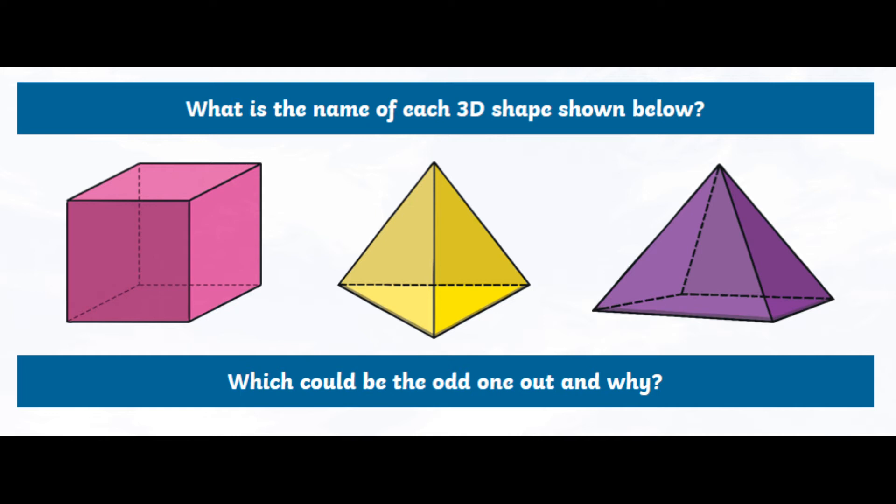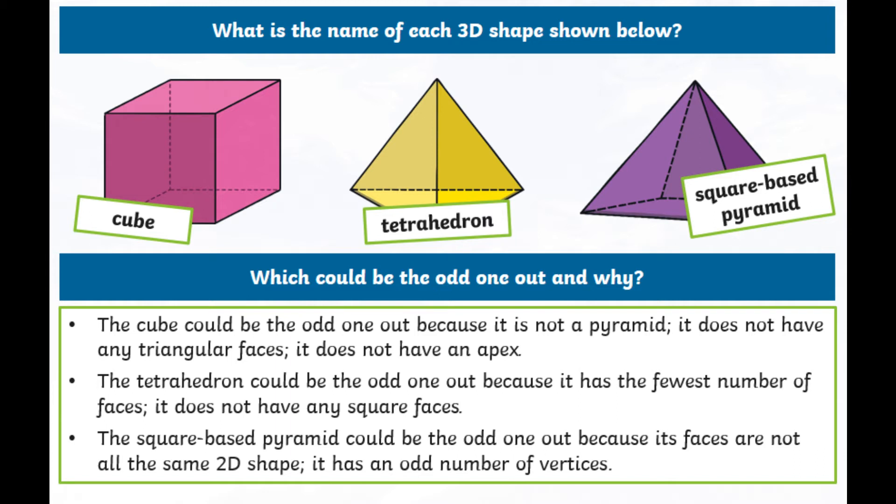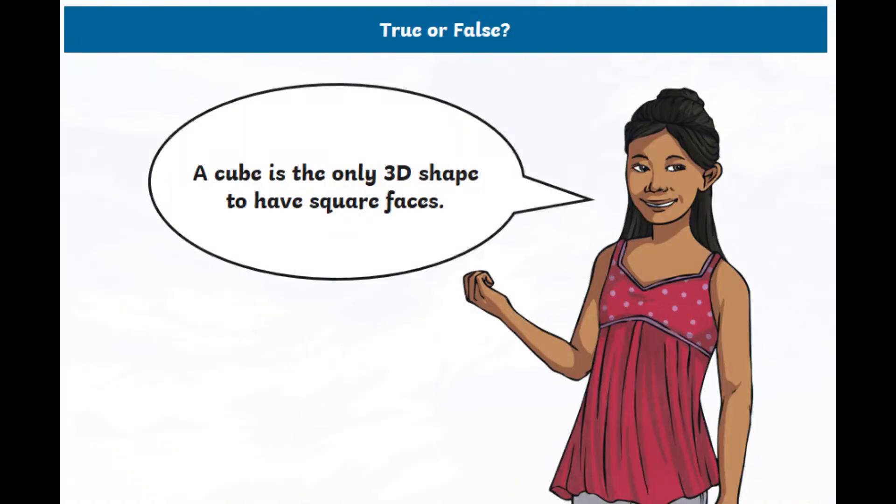So we've got a cube, we've got a tetrahedron, and we've got a square-based pyramid. As for the odd one out, I think you probably guessed we can justify it. So each of the three could all be the odd one out for a different reason. So the cube could be the odd one out because it's not a pyramid, it does not have any triangular faces, the other two do, and it does not have an apex. However, the tetrahedron could be the odd one out because it has the fewest number of faces, it does not have any square faces. Or the square-based pyramid could be the odd one out because its faces are not all the same 2D shape, and it has an odd number of vertices. So well done if you've got any of those. Excellent stuff if you manage to work out a reason for each of the shapes. That's superb reasoning.